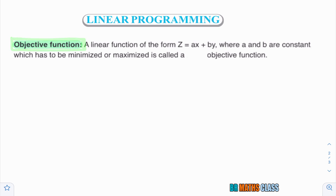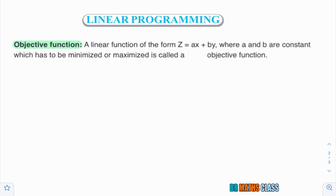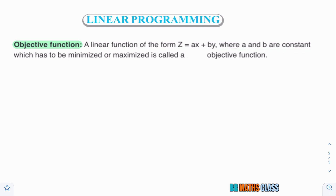What is the definition of objective function? A linear function of the form z = ax + by. You already know what is a linear equation in one variable, linear equation in two variables. Here, ax + by is the linear equation in two variables — x and y are the variables, and a and b are the constants. A linear function of the form z = ax + by, which has to be minimized or maximized, is called an objective function, also called a linear objective function.